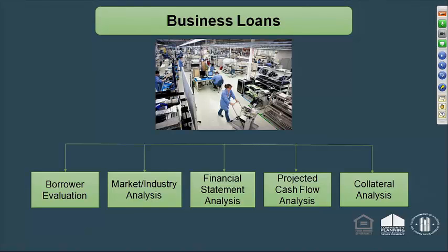You're going to look at the industry and the market — is there demand if the purpose is to expand operations, for whatever goods or services produced by this business? You'll do the basic financial statement analysis, look at sources and uses of funds, and review the borrower's balance sheet and income statement to make sure they have the ability to not only pay you back but meet all business expenses and generate additional cash flow sufficient to repay the Section 108 loan.